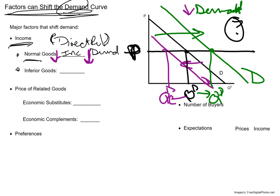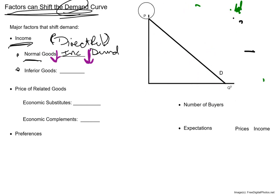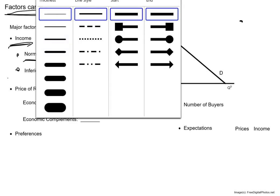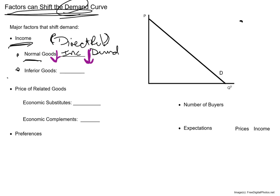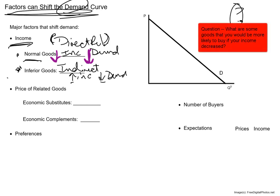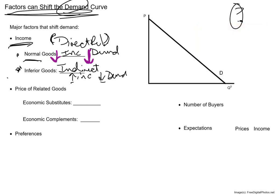That structure of demand curves shifting right for increases and left for decreases applies to any of these factors. Inferior goods are when there is an indirect relationship between income and demand — when your income goes up, your demand goes down. Think about what things you would buy more of when you have less income, or what someone who lost their job tends to buy more of. Those items are what we call inferior goods.